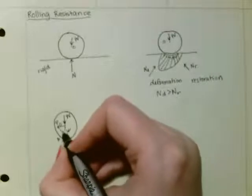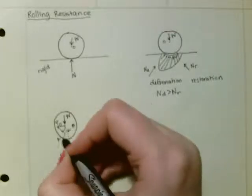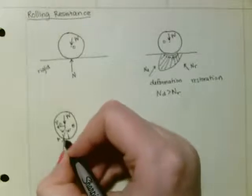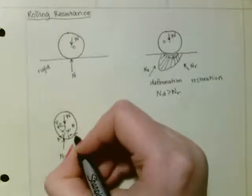And that angle right there is angle theta. And this distance from A to the center of the cylinder is called little a.